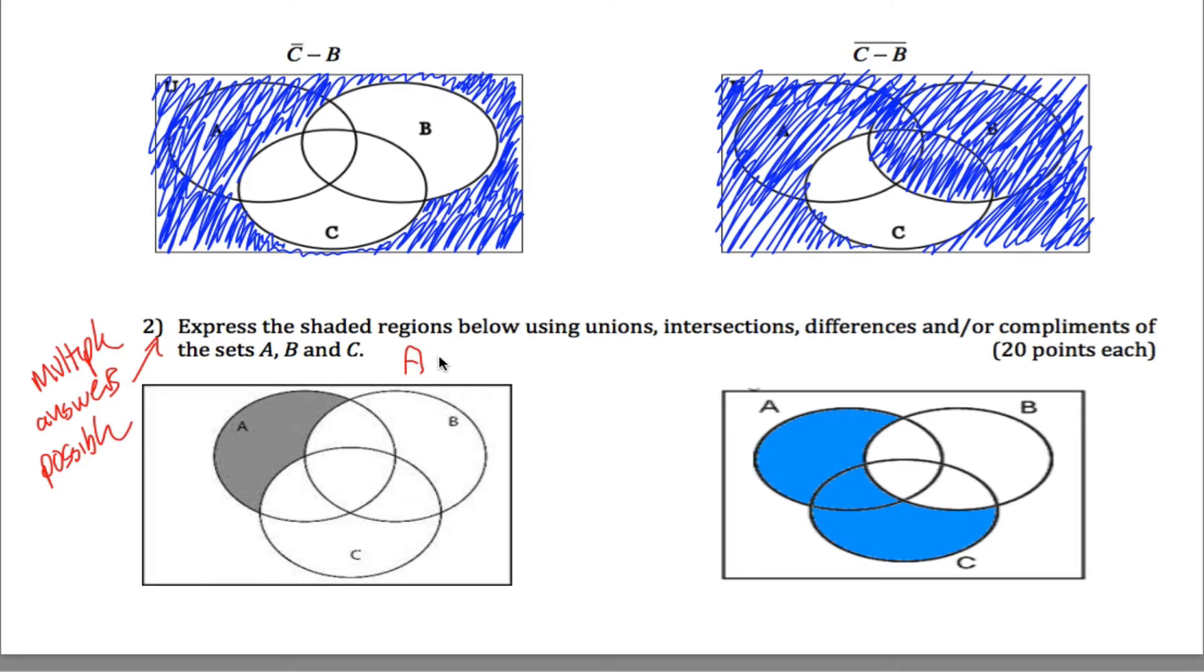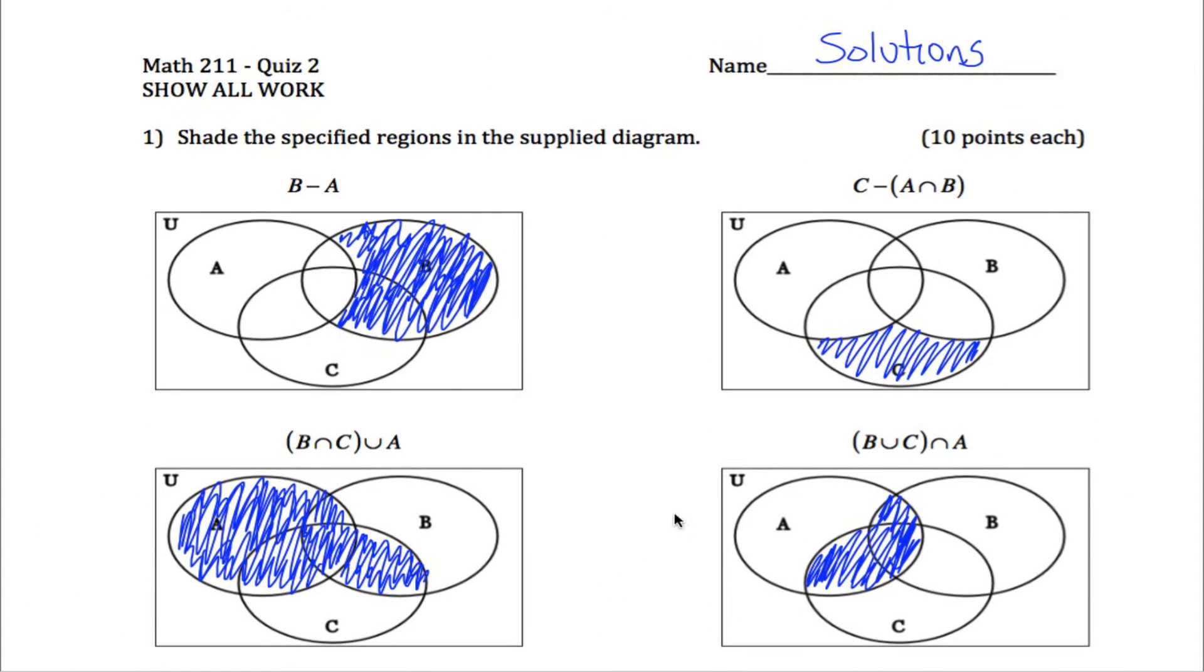It's just if I start out with all of A, I'd have this entire circle. So I have to erase some stuff. Well, what am I going to erase? I'm going to get rid of anything that is in this big figure eight. I'm going to get rid of B union C. And as I said, I think we did that one before. It's very similar to this one where you took away C.